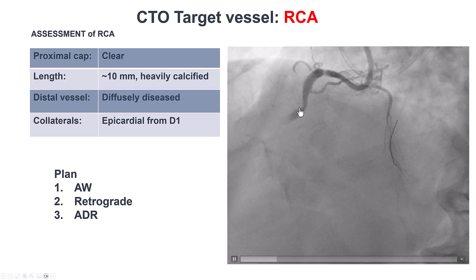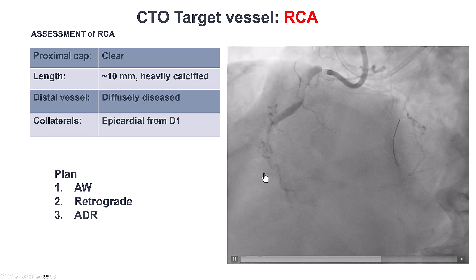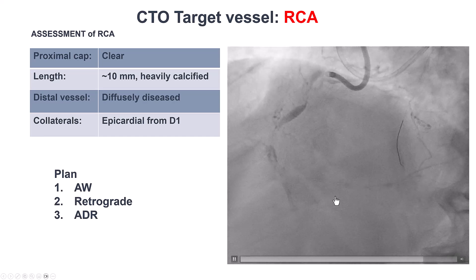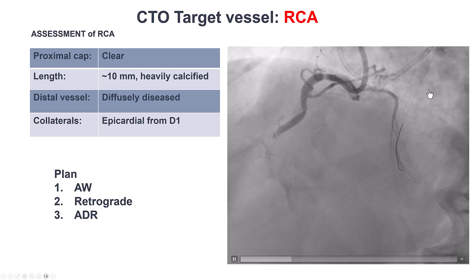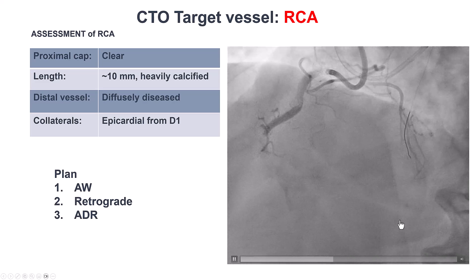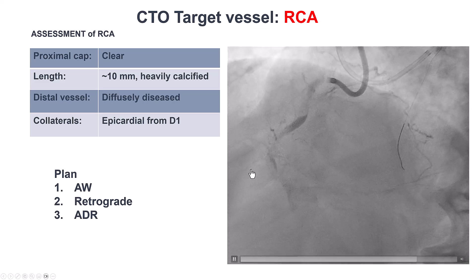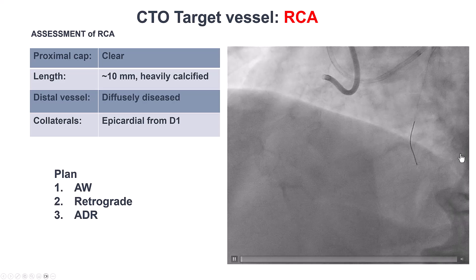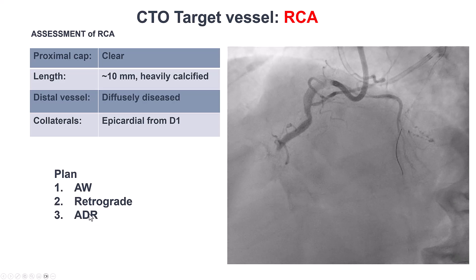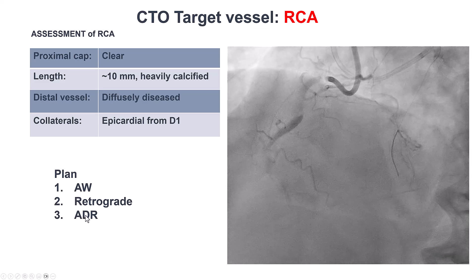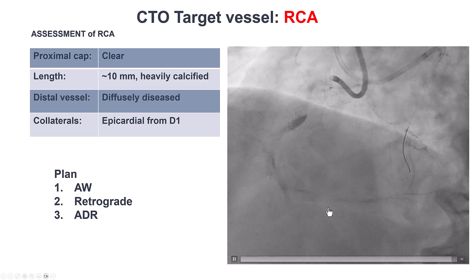So we have a RCA CTO with a clear proximal cap. The length appears to be relatively short. Distal vessel is diffusely diseased. There is severe calcium, and there is this epicardial collateral coming from the first diagonal. Our plan was to go with antegrade wiring first. If that failed, retrograde through the epicardial. If that failed, go to ADR. The reason that ADR is further down the list is because of the heavy calcium, which can make reentry much more challenging.